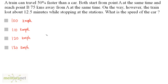A train can travel 50% faster than a car. Both start from point A at the same time and reach point B, 75 km away, at the same time. On the way, the train lost about 12.5 minutes while stopping at stations. What is the speed of the car?